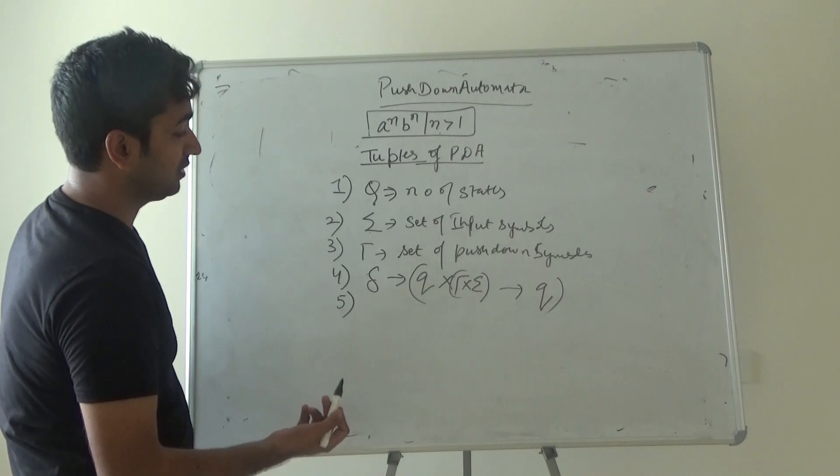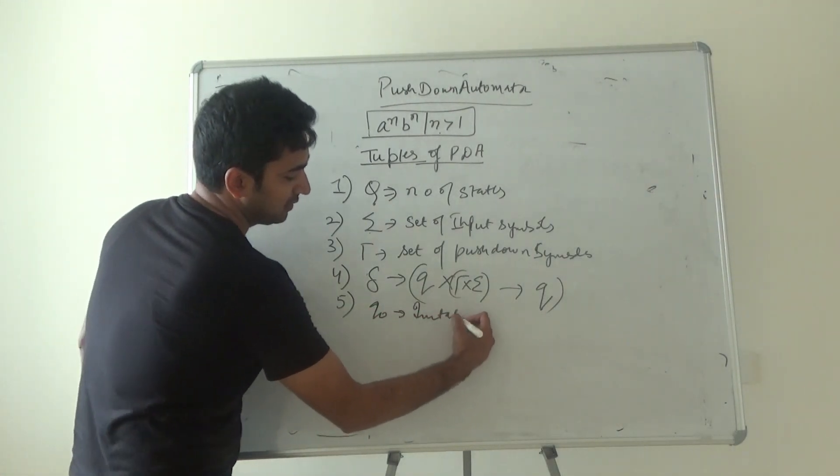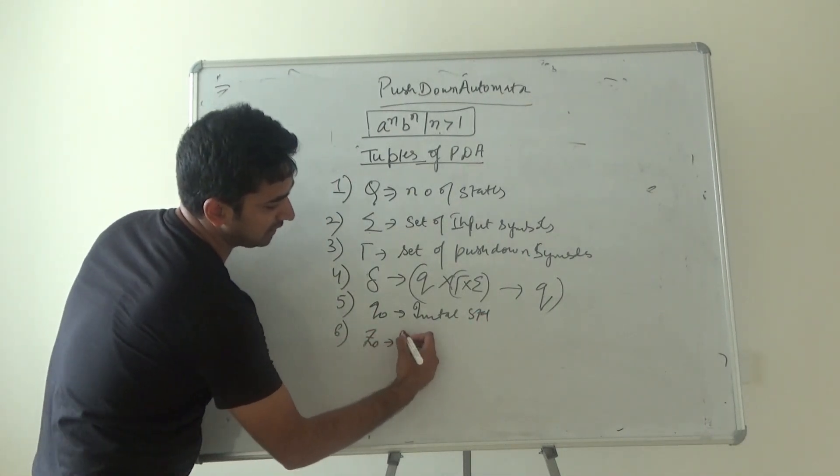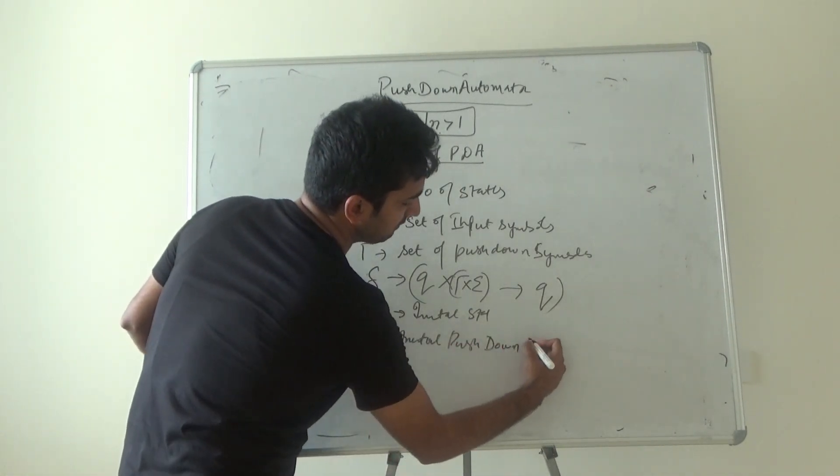Then there is initial state obviously. Then there is Z_0 which is the initial push down symbol.